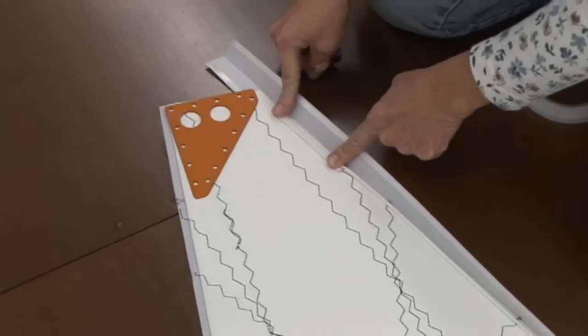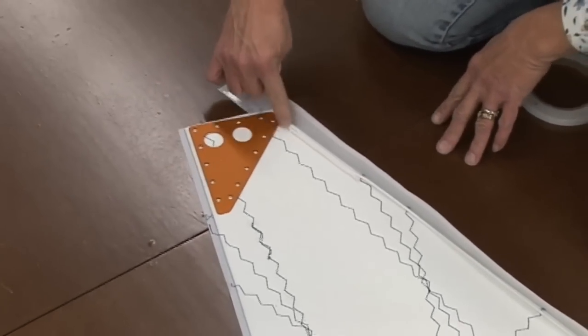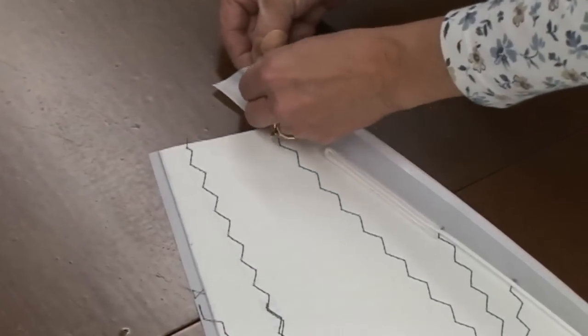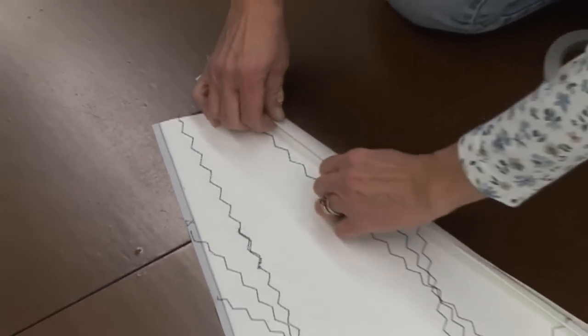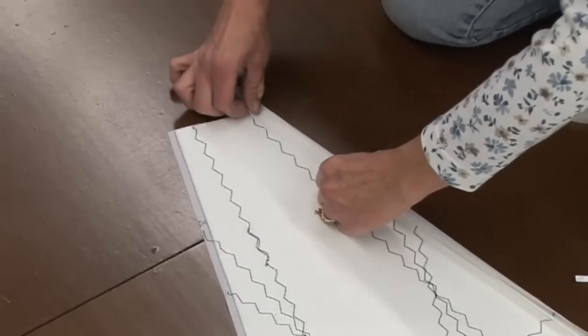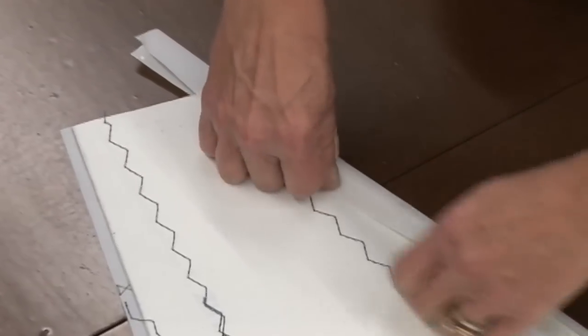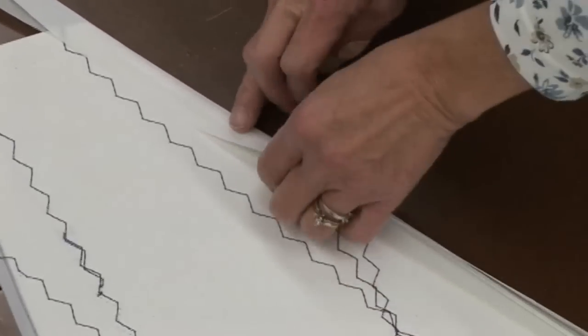You always want to check with the headboard on a mainsail to make sure there's room for the headboard to sit flat. And there is. Now we'll peel off the transfer paper on top of the basting tape along this Dacron tape and baste it in position over the leach line.